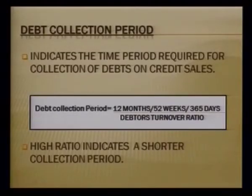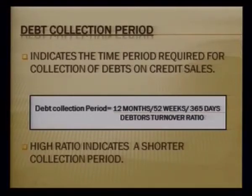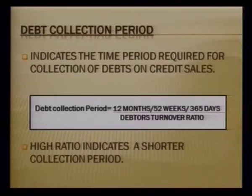We can also compute the debt collection period — the average time taken by the firm to realise its credit sales. Shorter the period, the better it is. A higher debtors turnover ratio gives a shorter collection period. The formula is 365 days (or 52 weeks or 12 months) divided by the debtors turnover ratio. First compute the debtors turnover ratio, then the collection period.